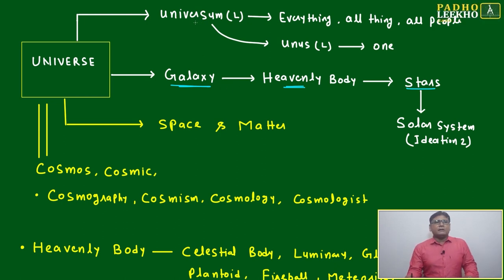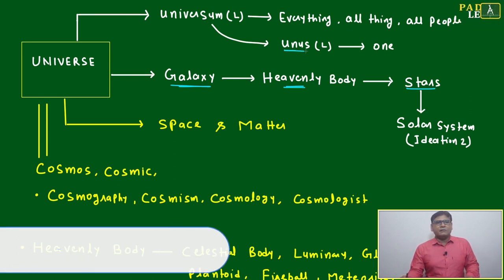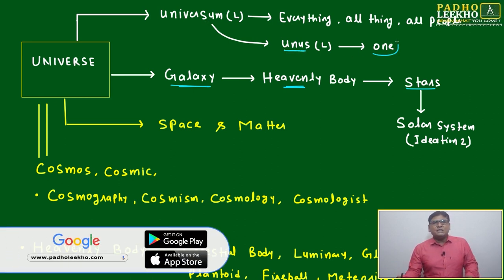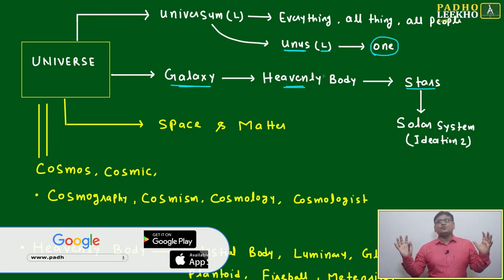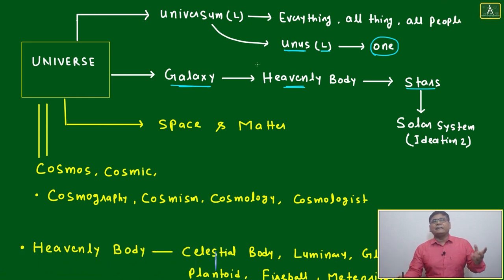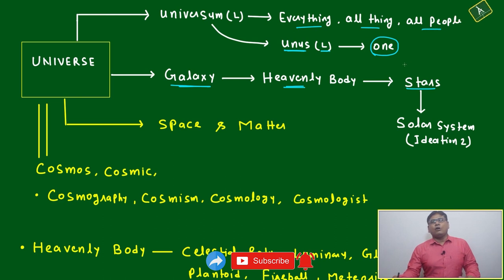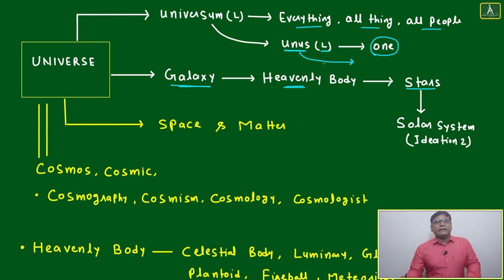The root of the universe is universal and main root is units, means one. That is from that - means this is one complete, one united - that's why it is a universe: everything, all thing, all people. That is universal or units. From this word many of the words are derived, this root, this Latin root units means one.